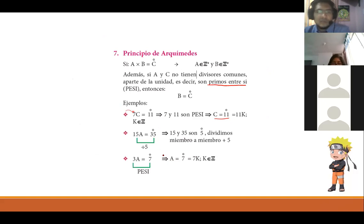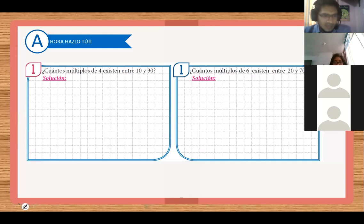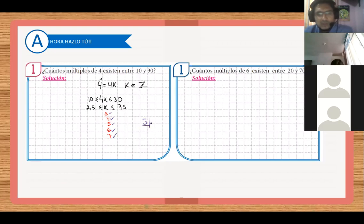Luego, lo que decía, del principio de Arquímedes. Sería A por B es igual a múltiplo de C. Y tendríamos 7C, como ejemplo, se ve más fácil. 7C es igual a un múltiplo de 11. Diremos 7 y 11 son primos entre sí. Por lo tanto, el número C va a ser múltiplo de 11 necesariamente. Y eso ya lo habíamos visto por acá. Acá está. 6. A eso le llaman principio de Arquímedes. Entonces, ya estos son un par de ejemplitos más. Y ahora sí, vamos con los problemas.